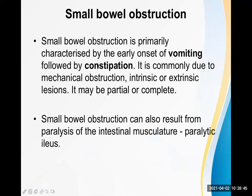Small bowel obstruction is primarily characterized by the early onset of vomiting followed by constipation. Vomiting is a very early feature, followed by constipation. Abdominal pain may also be present, and abdominal distension comes a little bit later. Those are the four cardinal features: vomiting, constipation, abdominal pain, and abdominal distension.